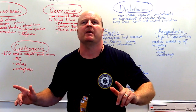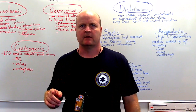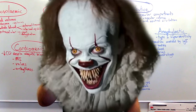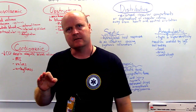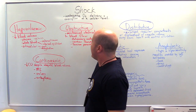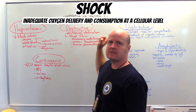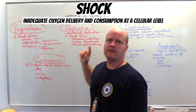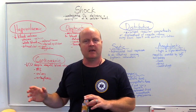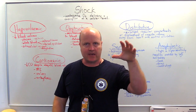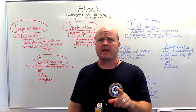Kia ora team. My name's Ben and let's talk shock. So that's not shock. What shock is, is inadequate oxygen delivery and consumption at a cellular level. We've got four main types and one of them has three types below that. So let's go through them now.